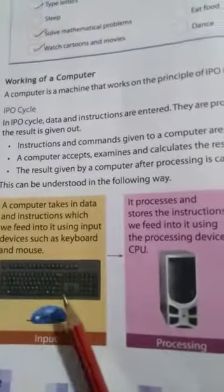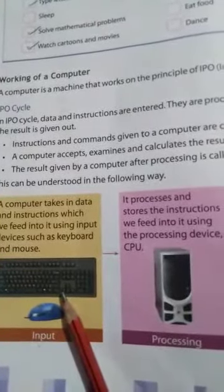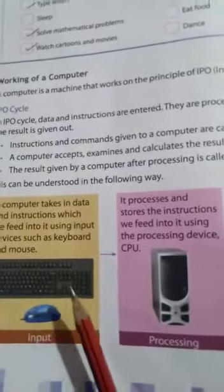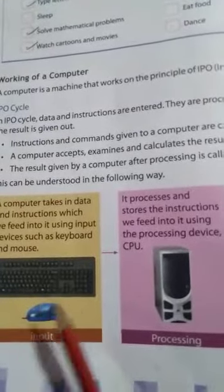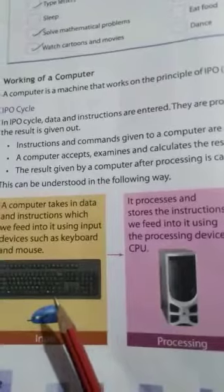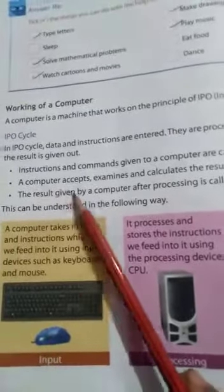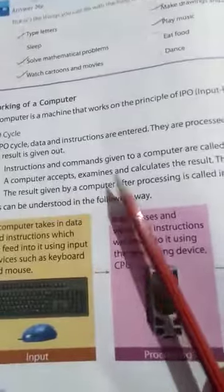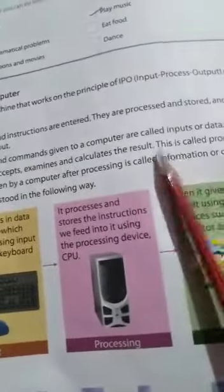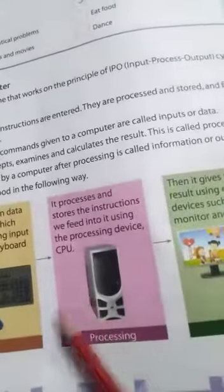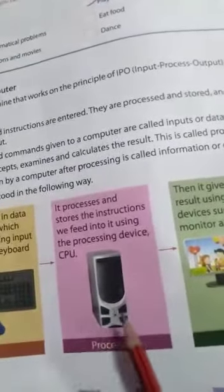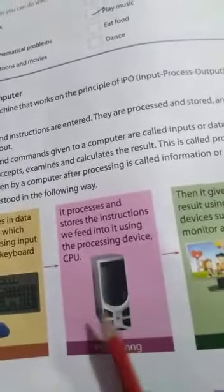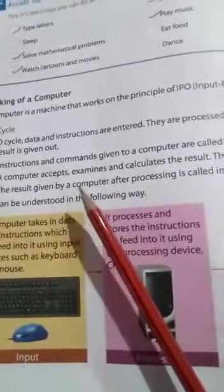Whatever we give instruction to the input device is called data, and data can be a letter, number, pictures, anything. And a computer accepts, examines and calculates the result, that is called processing. And where does the processing happen? In the CPU. With the help of CPU it processes the data.